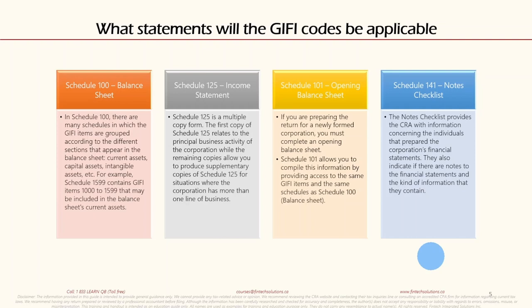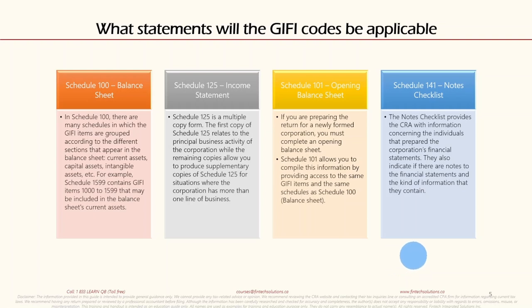Then there is Schedule 141, the notes checklist. It provides the CRA with information concerning the individuals that prepare the corporation's financial statements. It also indicates if there are notes to the financial statements and the kind of information they contain. So these are the four schedules on which GIFI codes are applicable, but the ones most often used are Schedule 100 and Schedule 125. Now let's look at sample examples of Schedule 100 and Schedule 125.